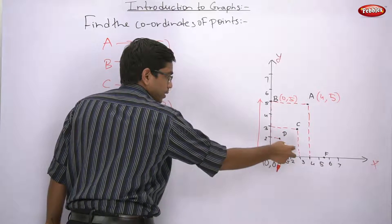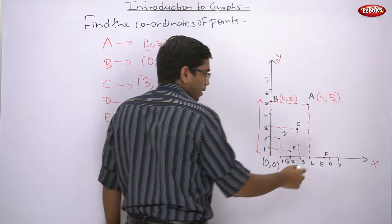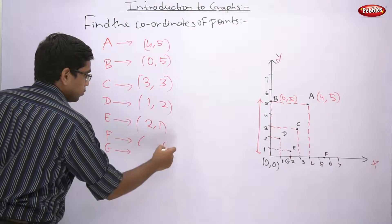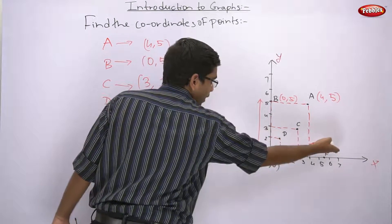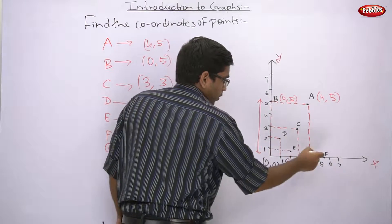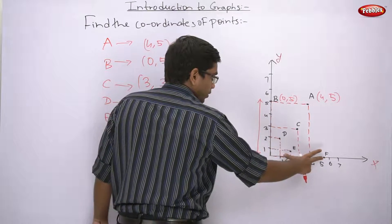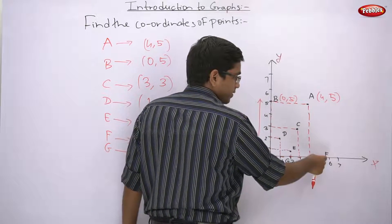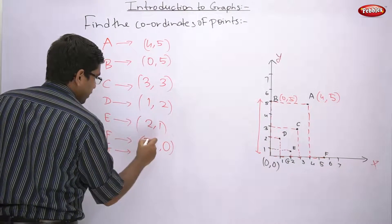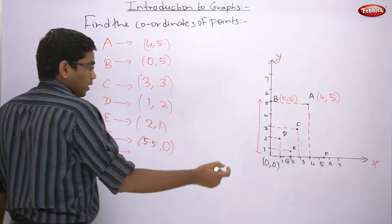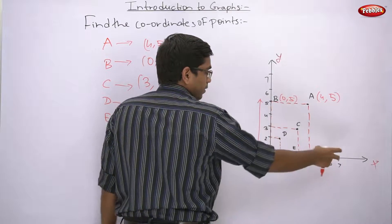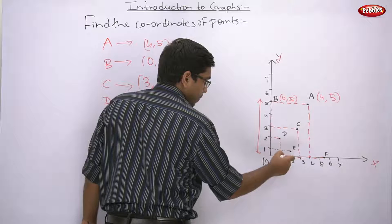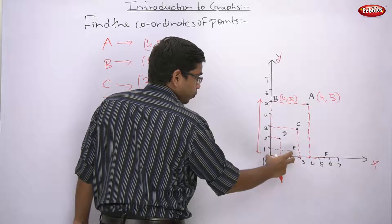For E: draw dotted lines on both sides. E's horizontal distance from origin is 2 and vertical distance is 1, so E's coordinates are (2, 1). For F: note that F already lies on the x-axis, so by default its y-coordinate is 0. Only horizontal distance needs to be calculated. That horizontal distance is 5.5 — exactly between 5 and 6. So F's coordinates are (5.5, 0).